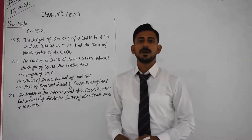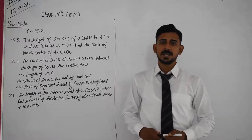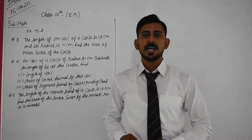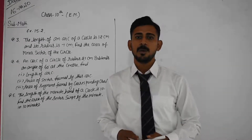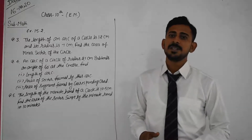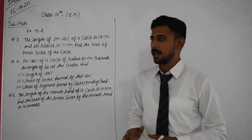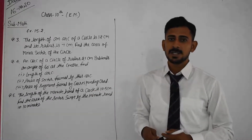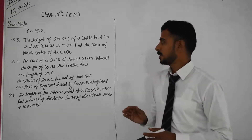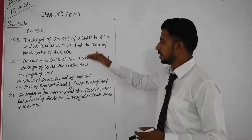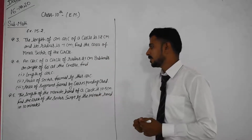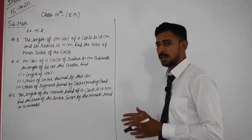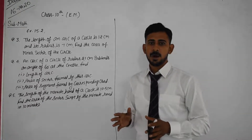Hello everyone, welcome back to our online classes of mathematics. Today we will discuss Exercise 15.2. The name of this chapter is circumference and area of circle. In Exercise 15.2, question number 1 and 2 are already completed. Now in the next questions, question number 3, we will find the value of length of arc, area of sector, and area of segment.